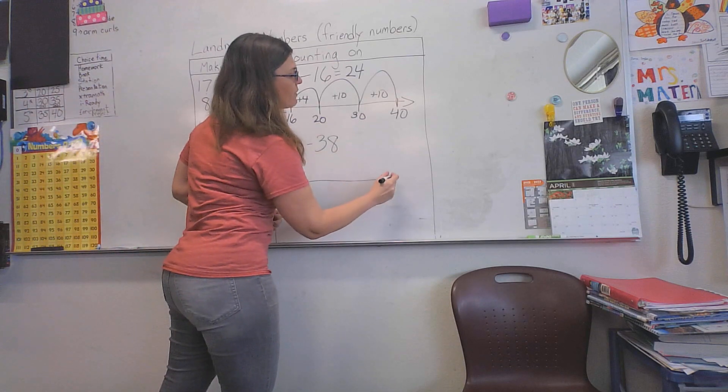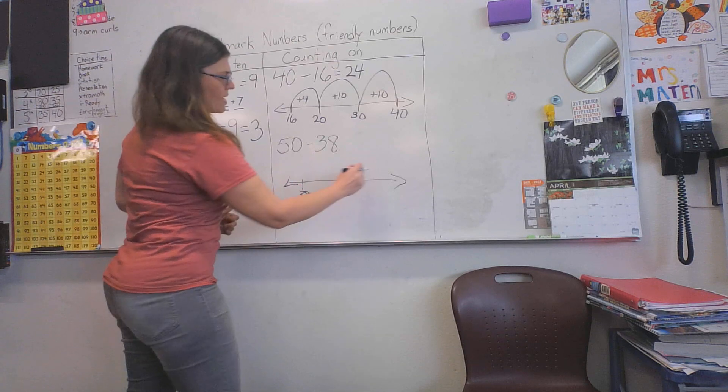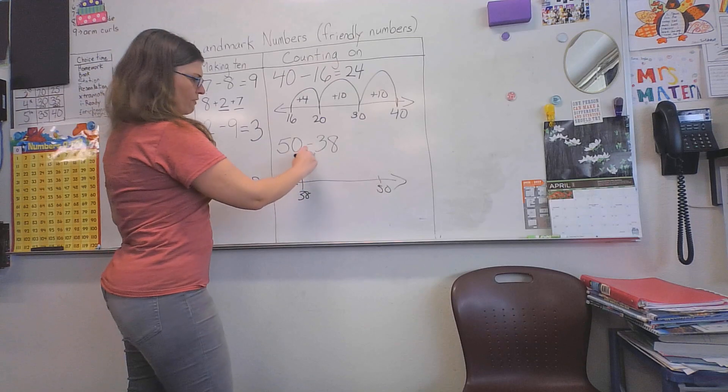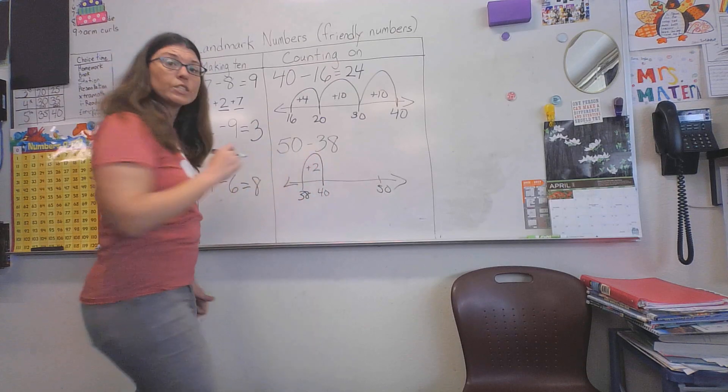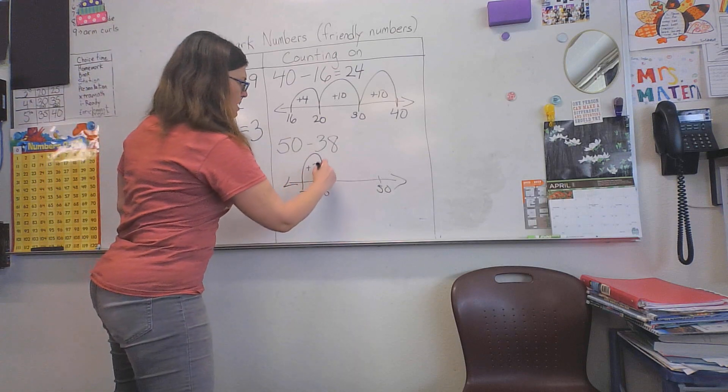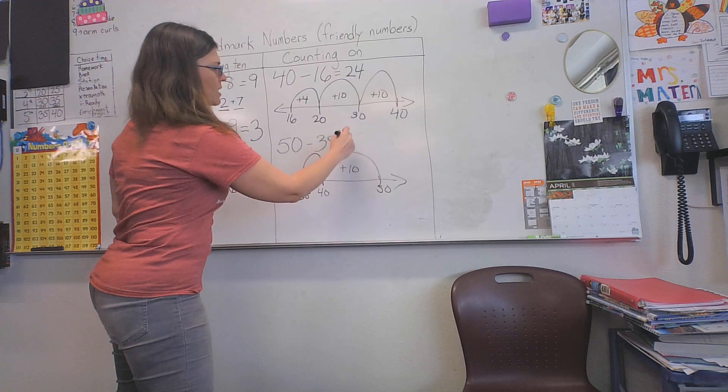We are finding the difference between 38 and 50. The first friendly number would be from 38 to 40. We know we need to add 2 to get from 38 to 40, and then from 40 to 50 we need to add 10. So the difference is 12.